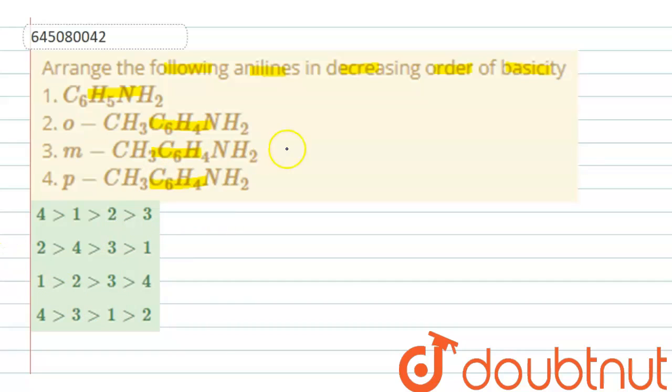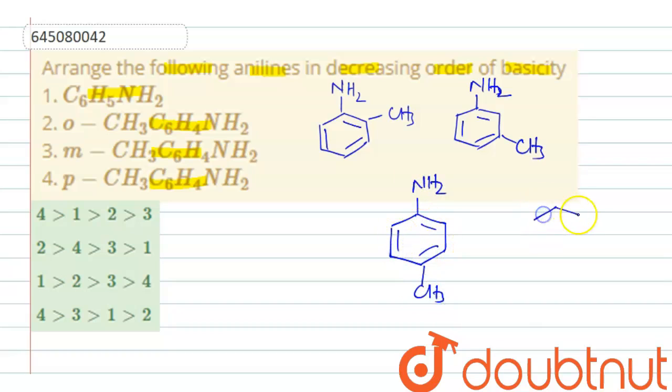Now, let us draw the structures. First, we have aniline, let us first draw orthotoluidine, NH2, this is CH3, then let us draw the double bonds properly, like this, then metatotoluidine, paratoluidine, then paratoluidine and finally, aniline.